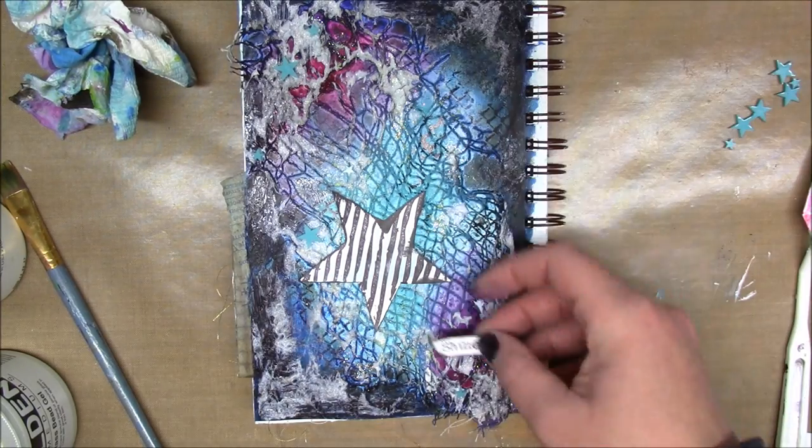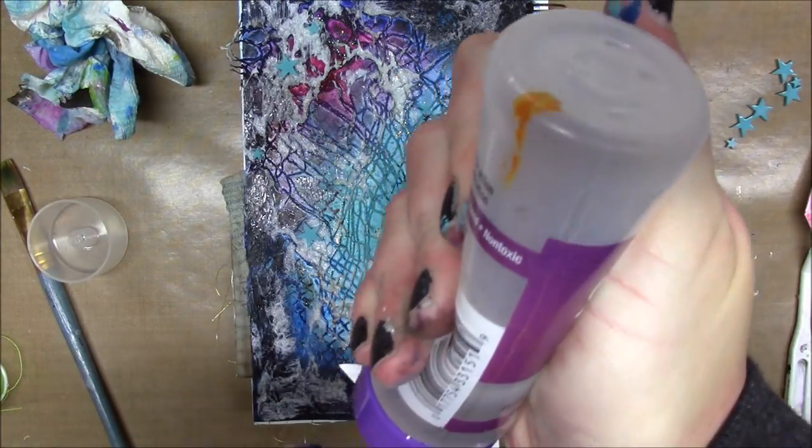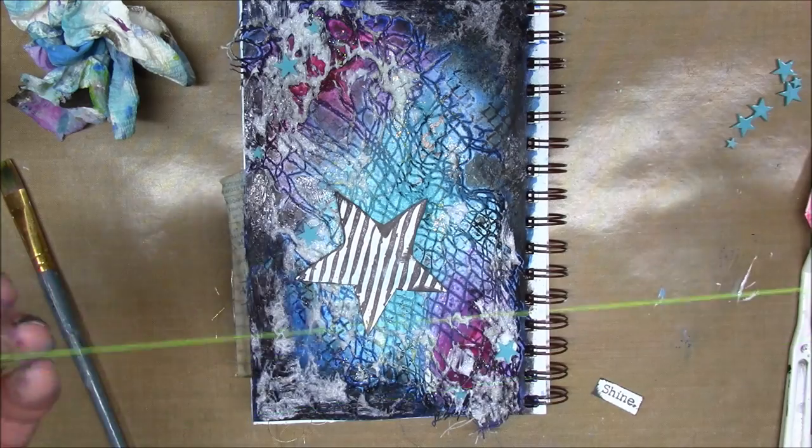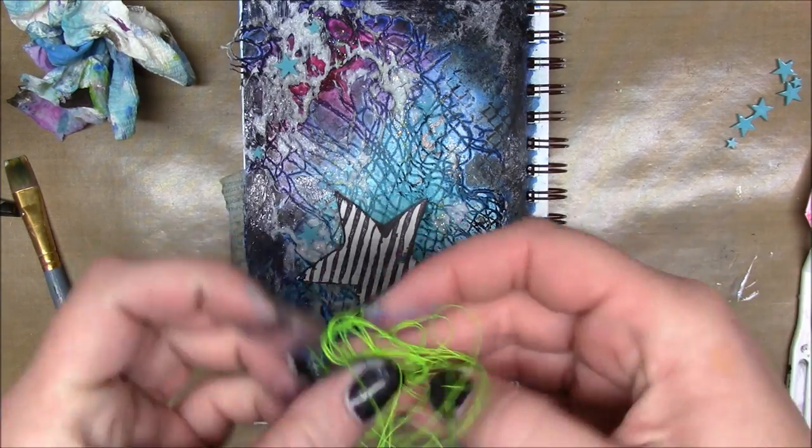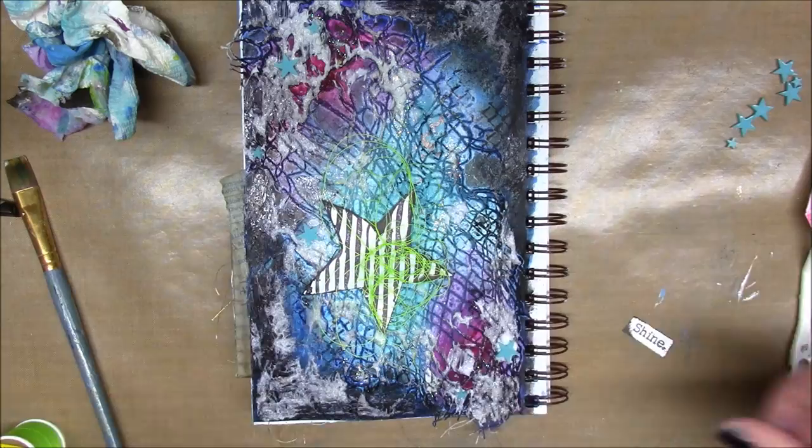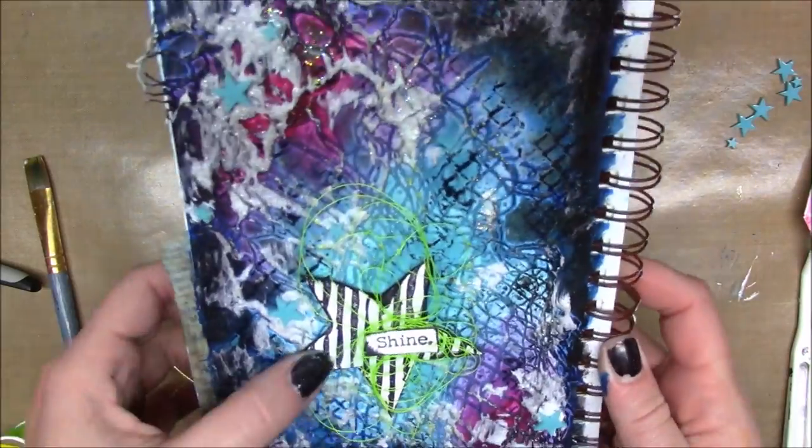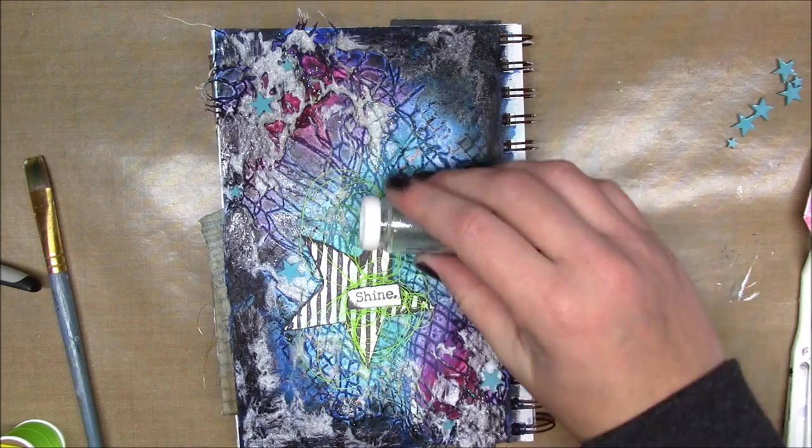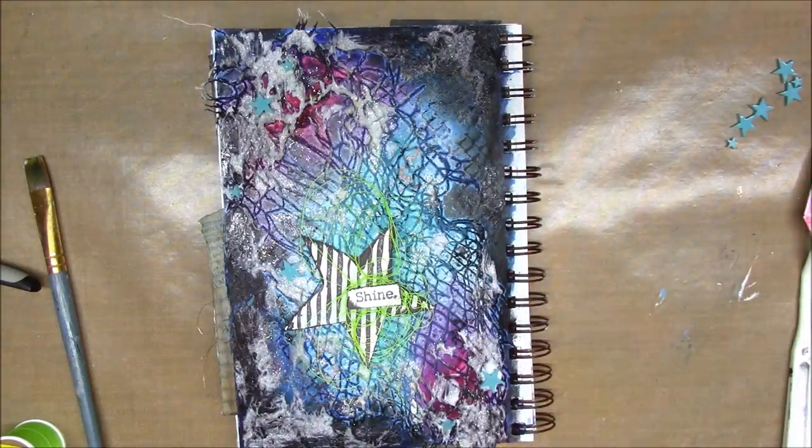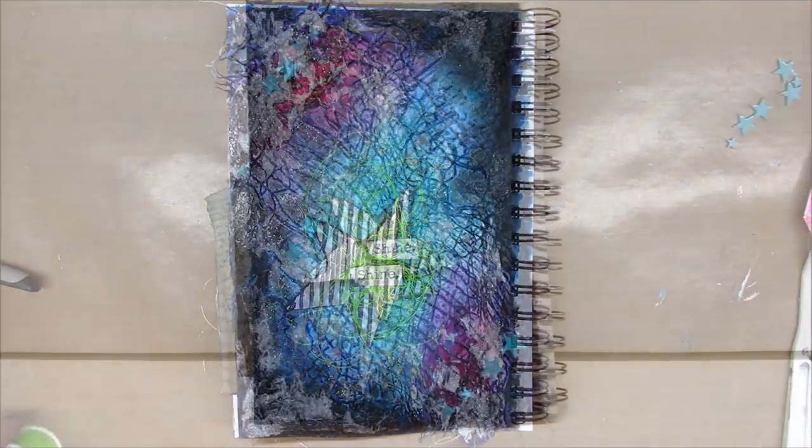This is a stamp from Dina Wakely from her Grungy Stars set. I have this lime green thread I got from Walmart on clearance for 50 cents. I haven't used it to sew yet, just for things like this. That star set also had a sentiment that says shine. I'm sprinkling some more teal glitter all around the page so it catches on the wet glass bead gel. That's my page for today.